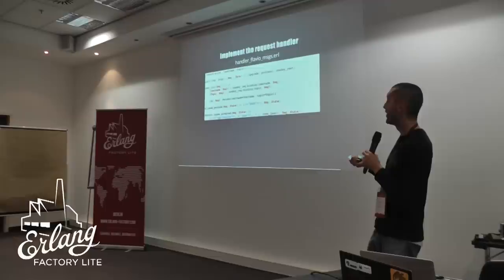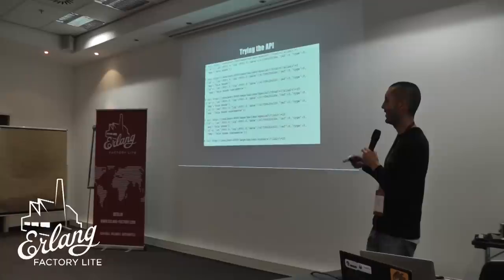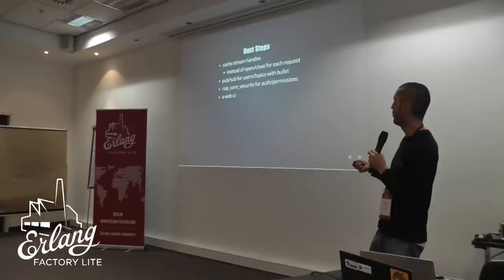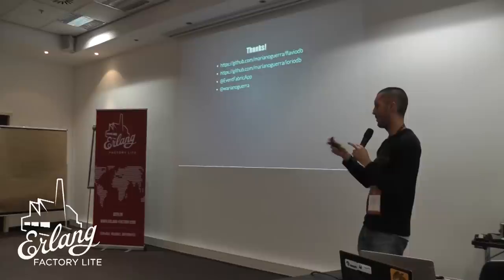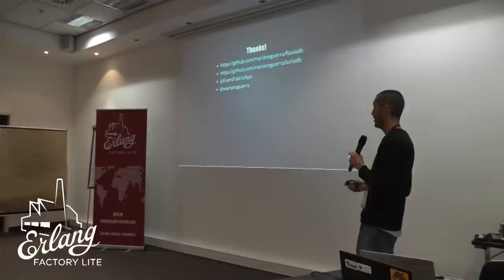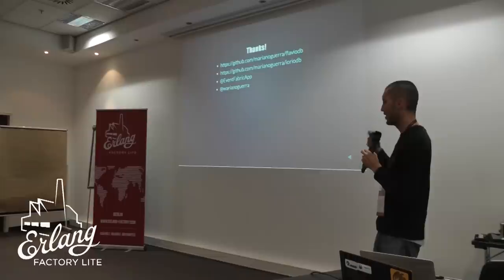You can also provide a nice HTTP API for your messaging system. Next steps are to cache the stream handles, to do PubSub over Cowboy with Bullet, and to use Riak Core security for authentication and permissions in the web UI. This is an ongoing project — each step in the slides is a commit on the project. It has a 32-page readme explaining everything for each commit with links. Thank you.